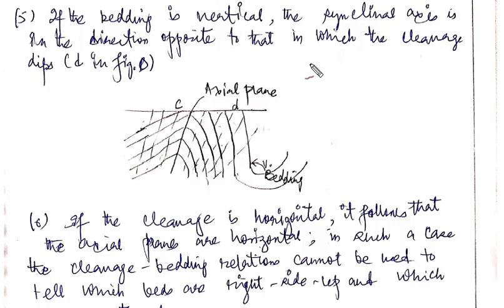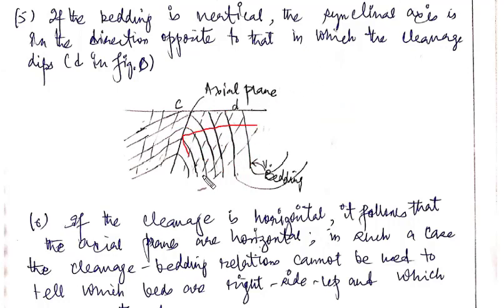If the bedding is dipping very steeply or more or less vertically, in this case your syncline will be in the opposite direction to that in which the cleavage is dipping. This is the fifth case. Suppose in the field you encounter an area where beddings are very steep and the cleavage planes are a bit gentle — the closure will be in the direction opposite to that in which your cleavage planes are dipping.